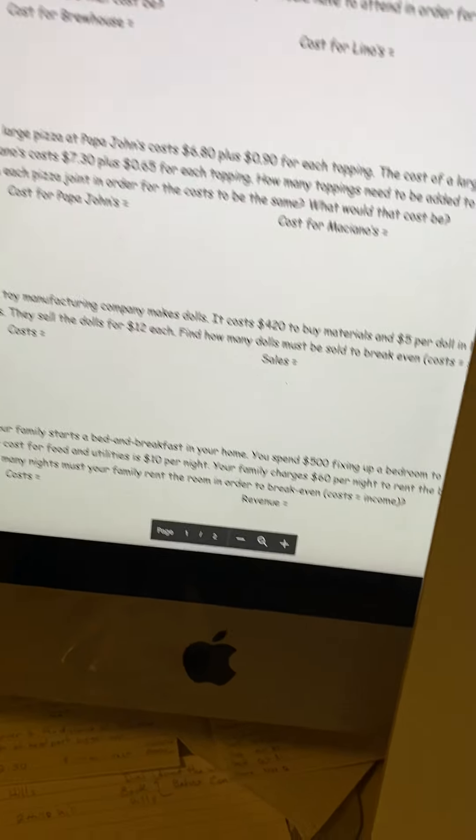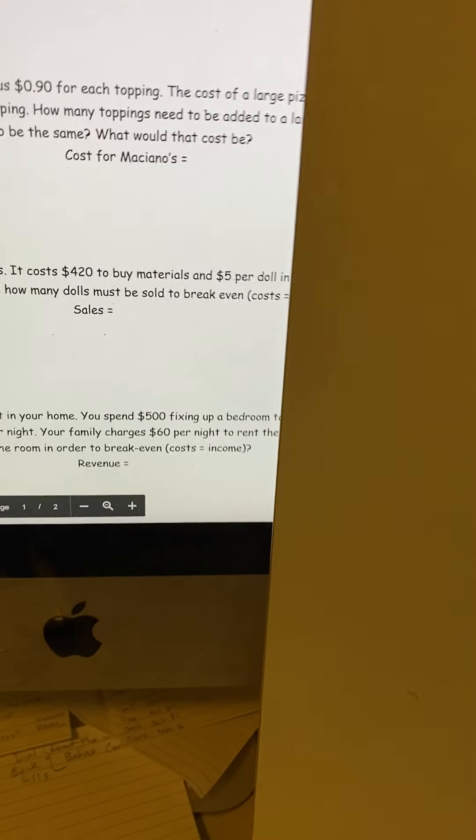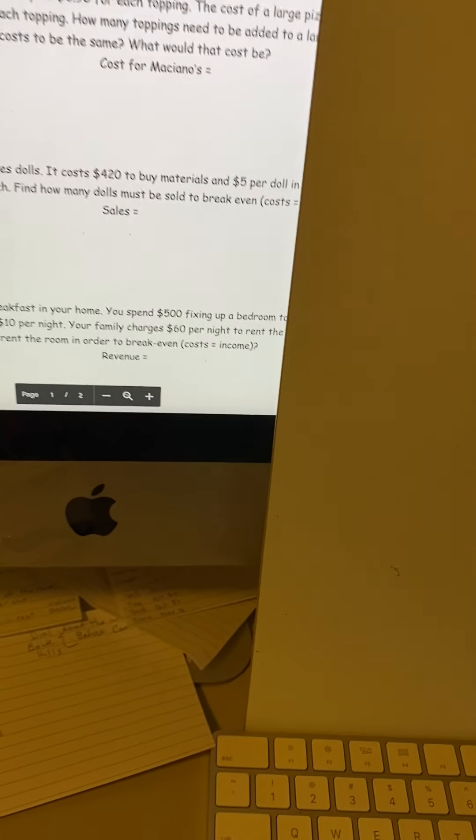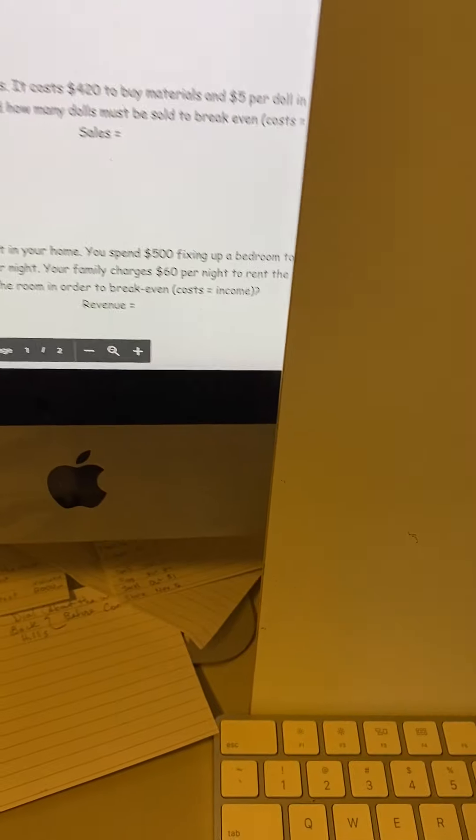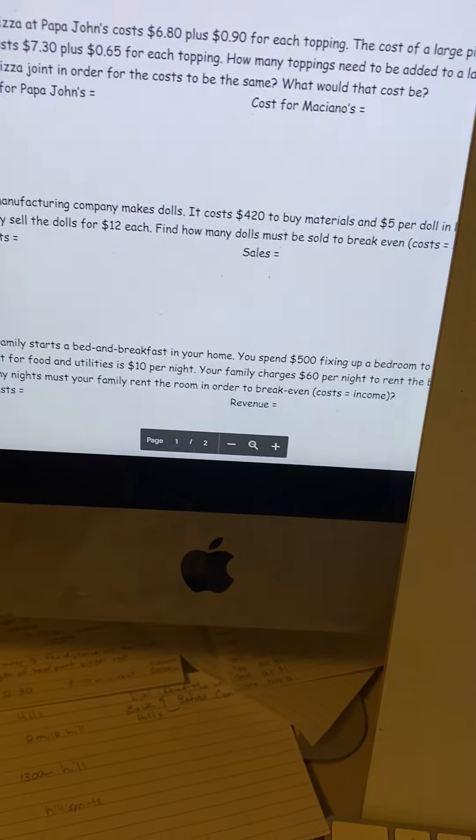I don't like the way they wrote cost for Brewhouse and cost for Lino's because they already told you it's going to be the same. So why don't you just write the cost? What would you assign the cost since you don't know it? Let's make it Y.